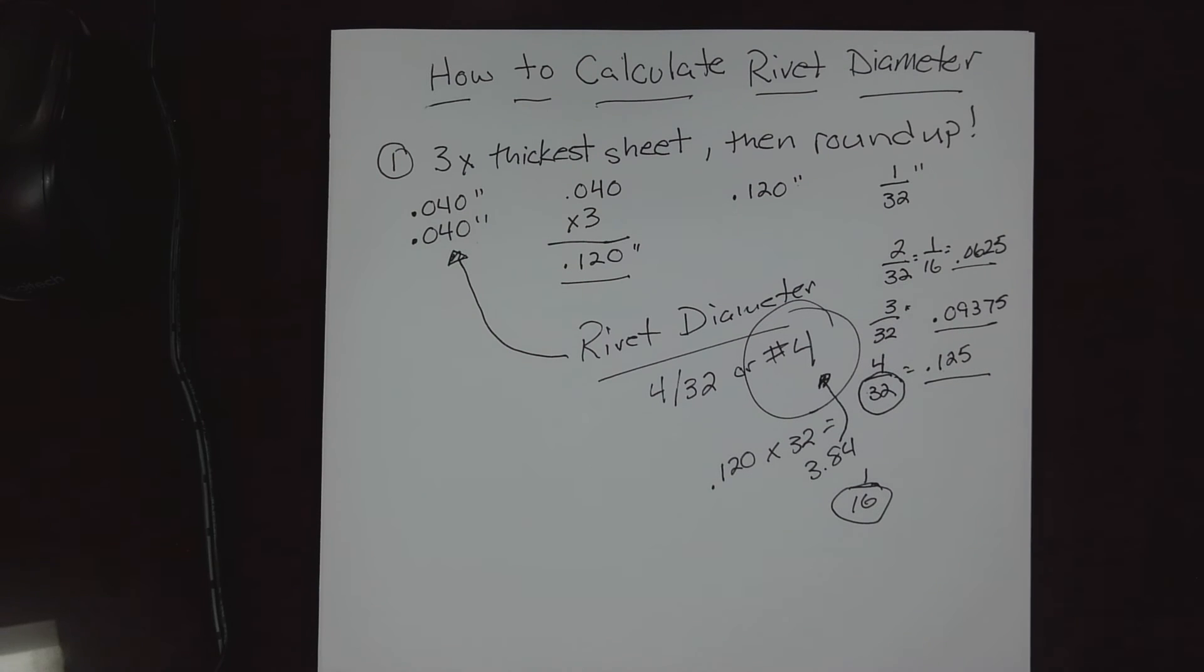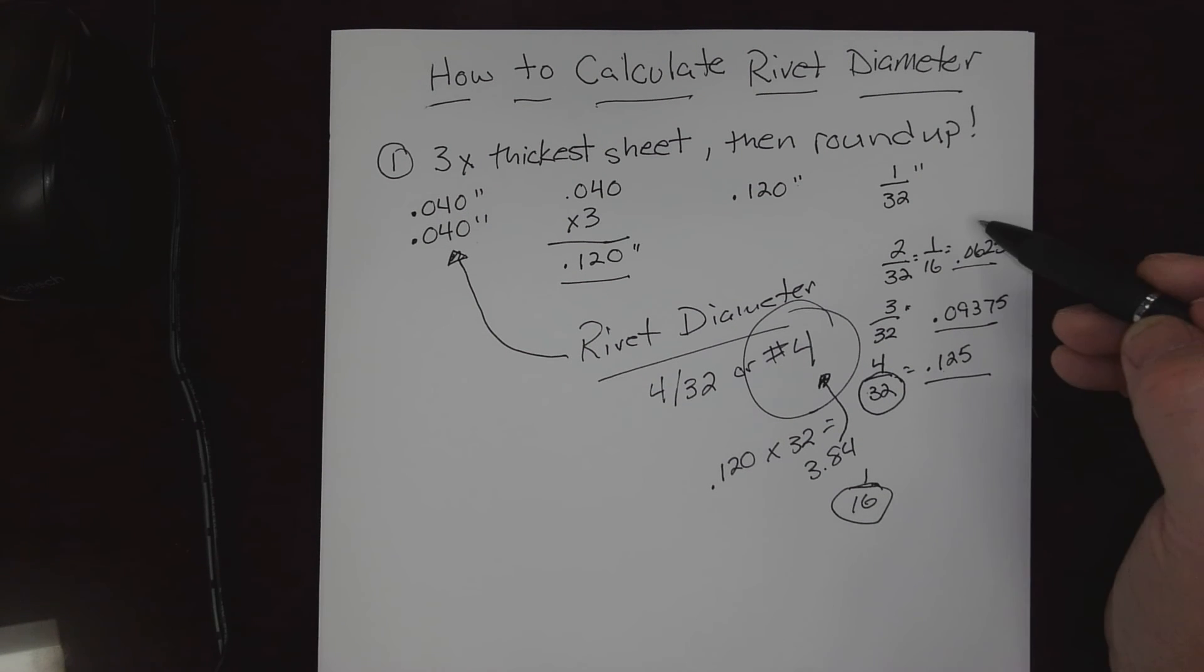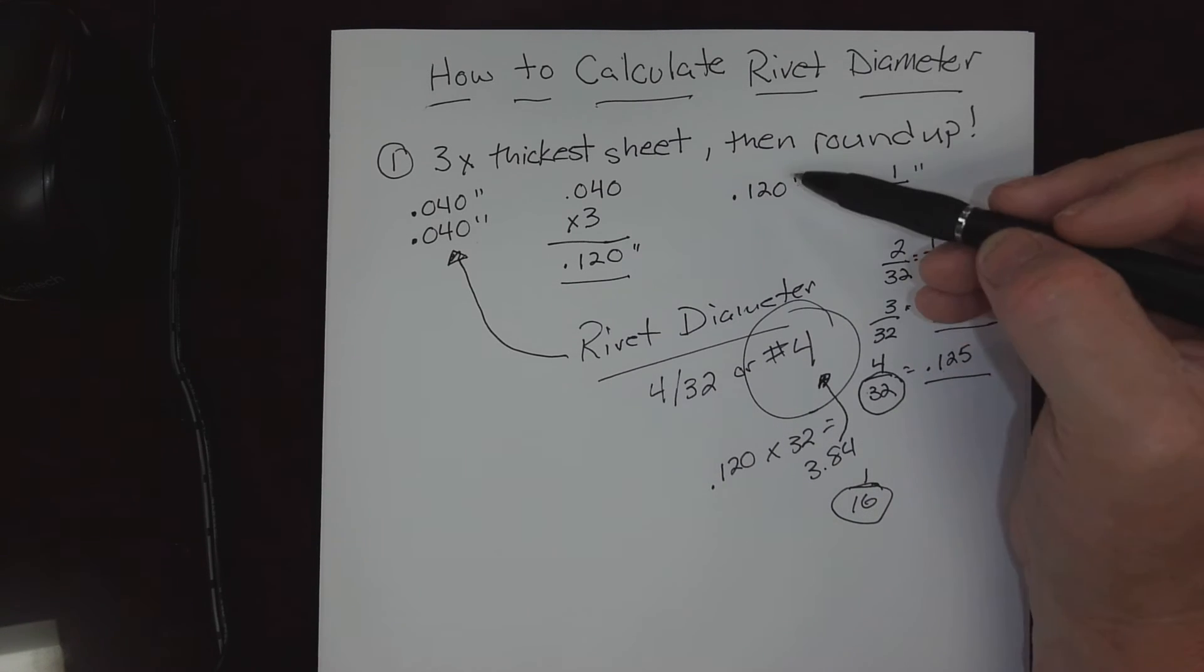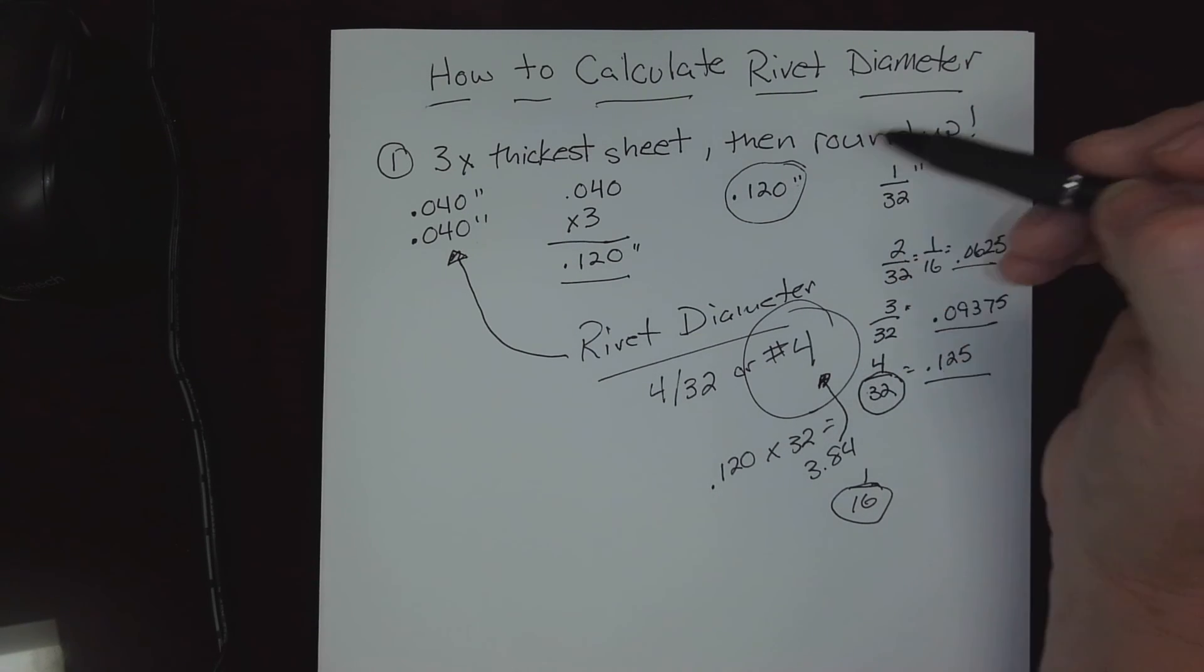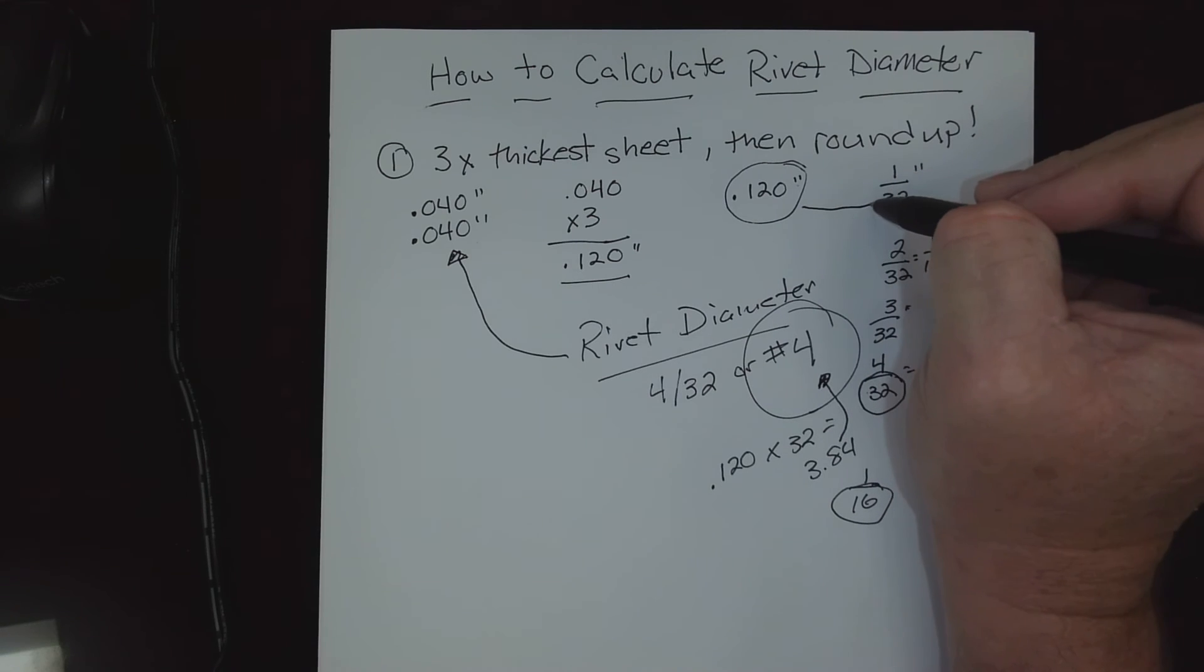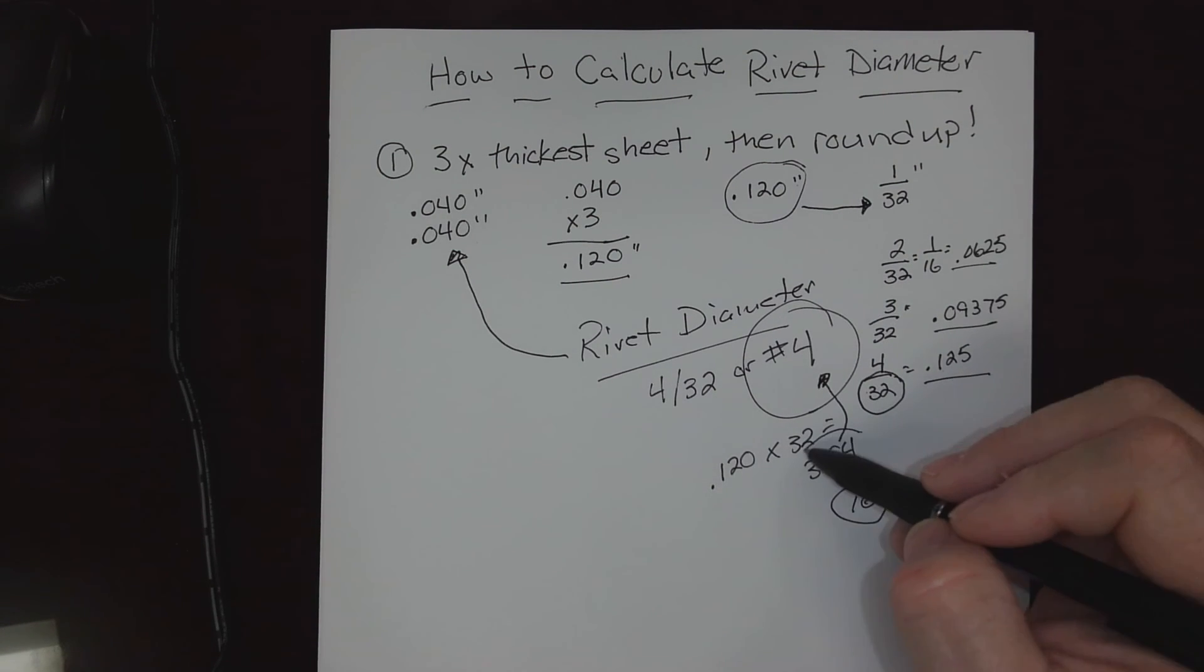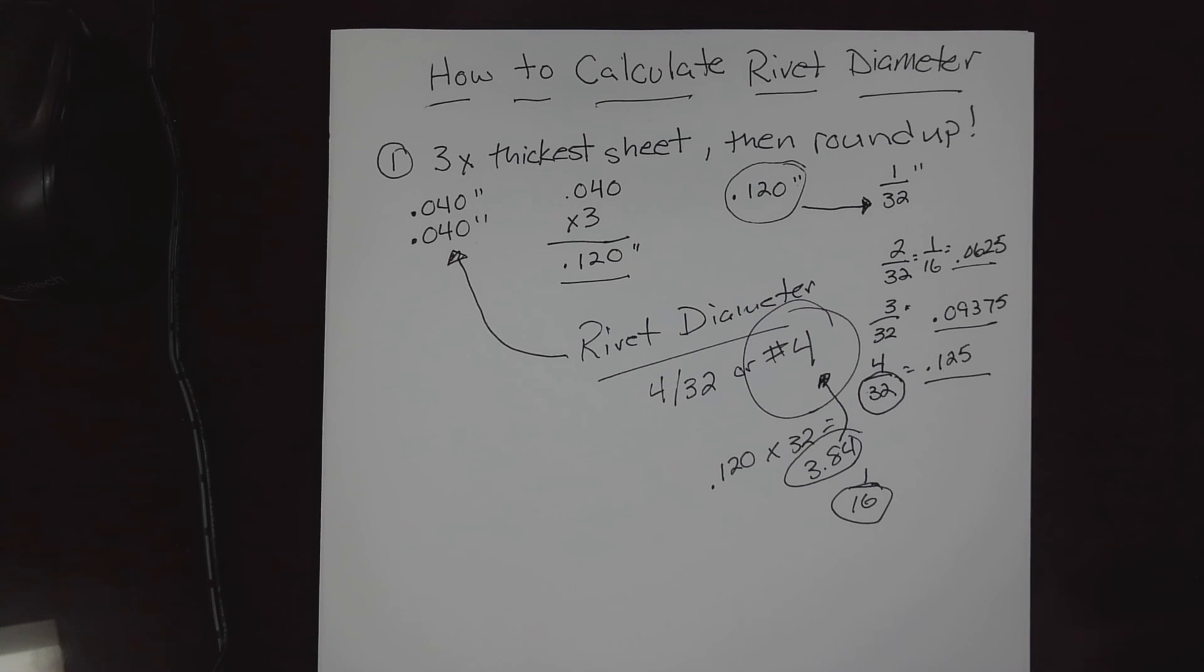So there's a couple of different ways. If you want to build a rivet table based on converting the fractions to decimals, or we can take our product of three times the thickest sheet, multiply it by the desired denominator. That'll give us a whole number and we could simply round up based on that as well. So there's a couple of ways to do it. It doesn't much matter as long as it's correct.